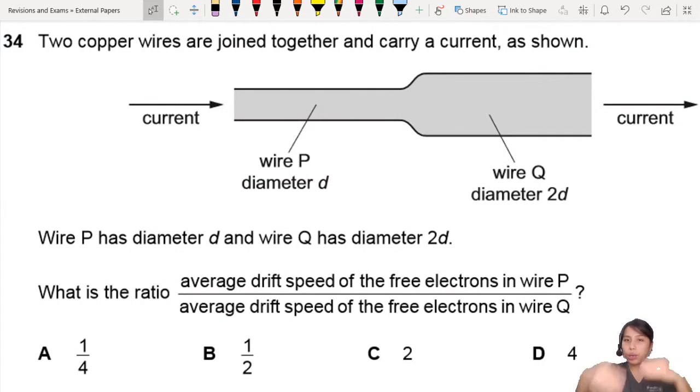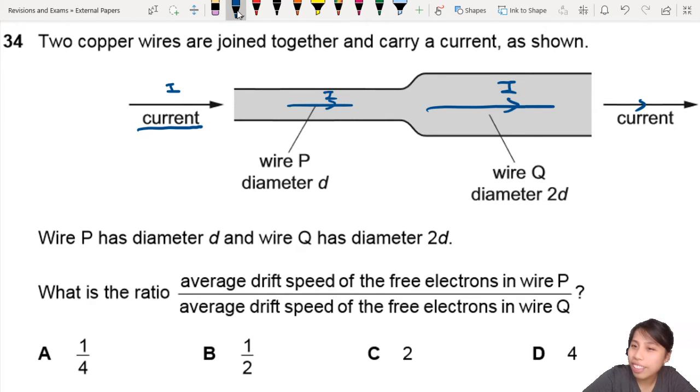Two copper wires joined together carry a current. You need to know this is a common misconception. If you have a current coming in, you must have the same current here, and the same current here, and the same current here. You cannot have charge just appearing or disappearing. So same current. Keep that in your mind.